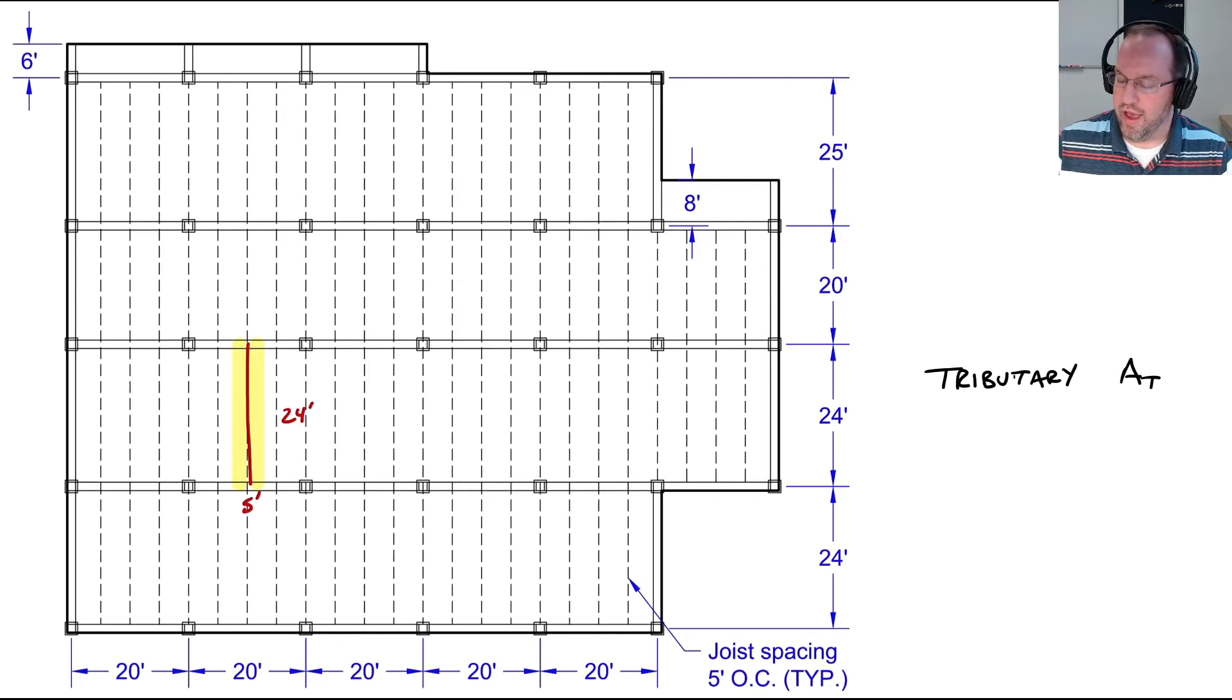We can look at a girder. It's going to collect half the area to the north and half the area to the south. This is a 20 foot span with 10 feet to the north and 12 feet to the south, therefore our area is 20 by 22 feet or 440 square feet.